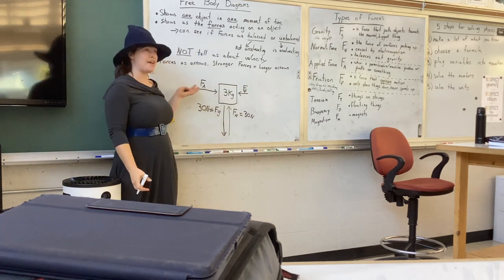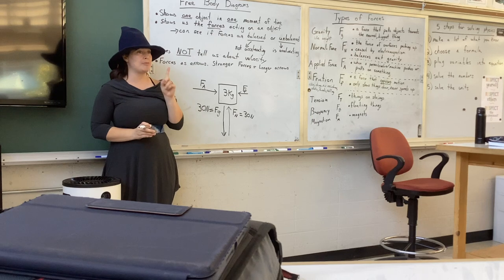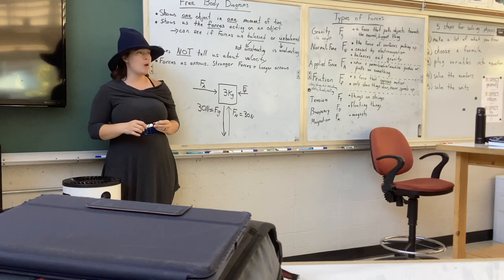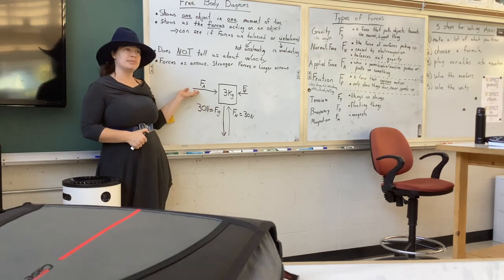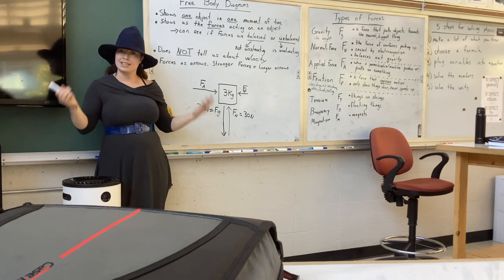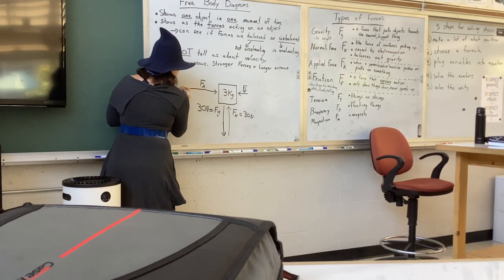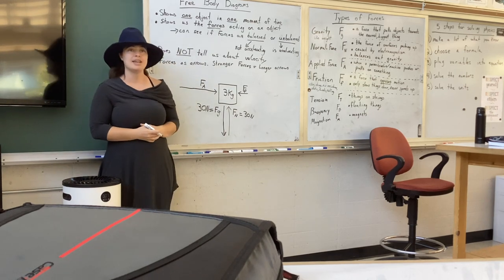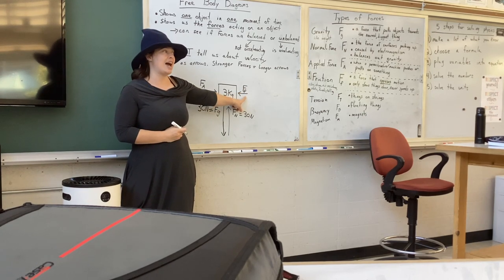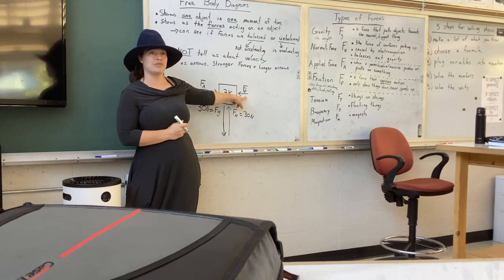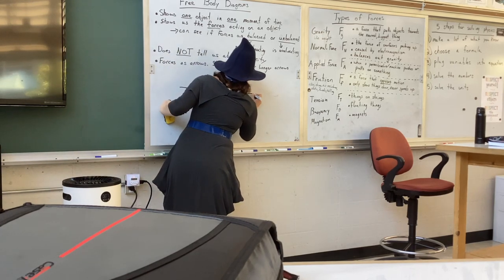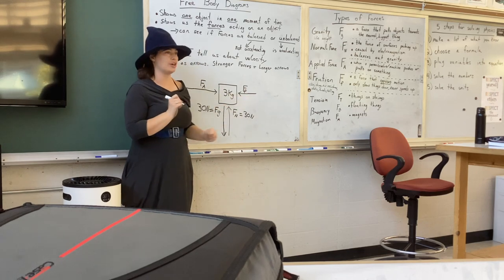This is a free body diagram for that fan cart. Remember, a free body diagram is one object at one moment in time. Let's say this is the fan on medium — what would be different if I set the fan to high? The arrow would be longer because the force is stronger. What would be different if I changed the surface from metal to wood, which has more friction? The friction arrow would be longer — the wood surface was the bigger friction surface.